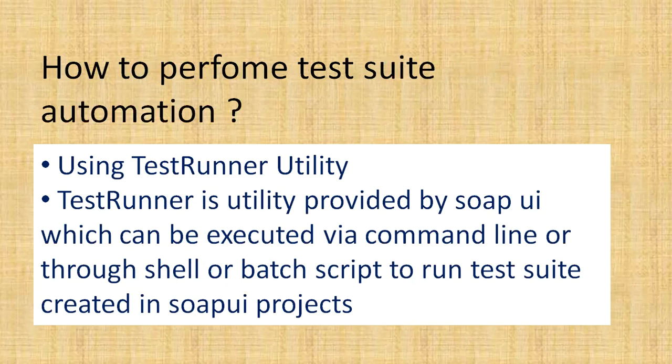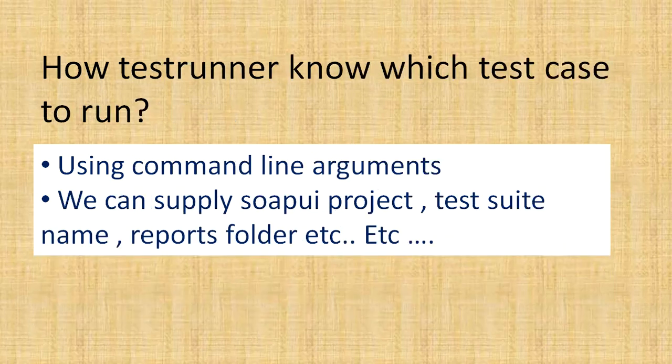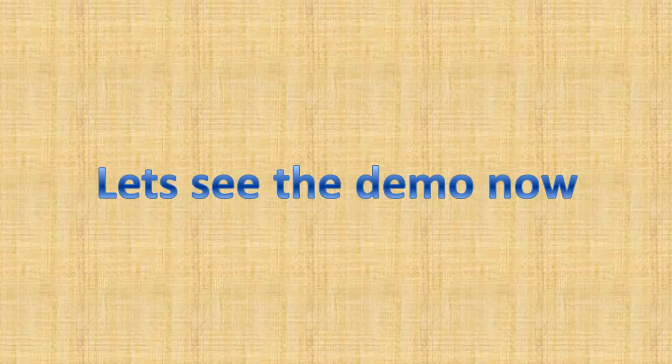So how can we do test suite automation? We can do that using the testrunner utility, which is provided by the SOAP UI tool. You can execute it via command line, or put that command into a shell script or Windows batch script to run your test suite. When we run this utility, we need to provide a few arguments: the name of the SOAP UI project, its location, which test suite to run, and where reports should be stored.